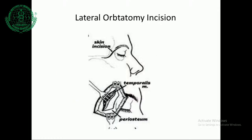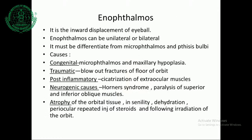Enophthalmos is exactly opposite to proptosis — it is the inward displacement of the eyeball, and can be unilateral or bilateral. It must be differentiated from microphthalmos and phthisis bulbi. Causes include congenital microphthalmos and maxillary hypoplasia, traumatic blowout fractures of the floor of the orbit, post-inflammatory cicatrisation of the extraocular muscles, neurogenic causes such as Horner syndrome and paralysis of the superior and inferior oblique muscles, and atrophy of orbital tissue in senility, dehydration, repeated periocular steroid injections, and following irradiation of the orbit.